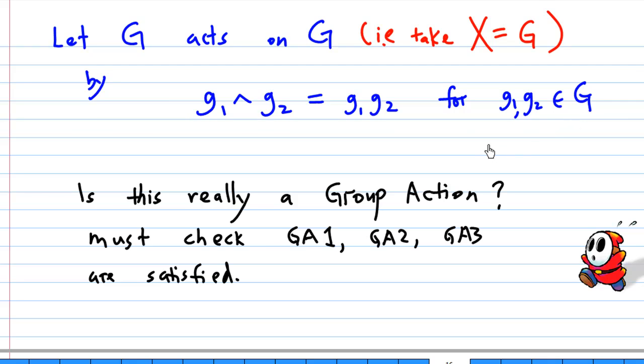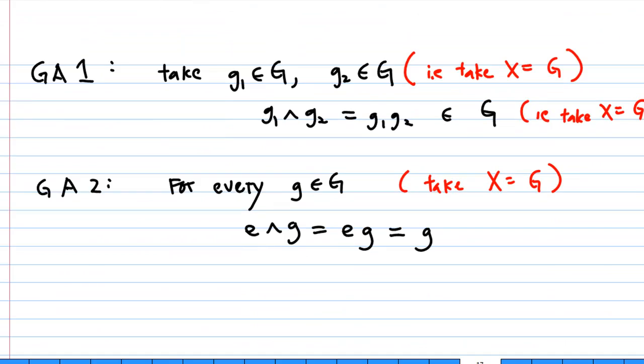Now, the question we ask is this already a group action? So, you must check GA1, GA2, GA3 that they are satisfied. So, let's check GA1 first. You know that if you have two elements g1 and g2 in G, then g1^g2 is g1 times g2 still belongs to G. This is by the closure property of G.